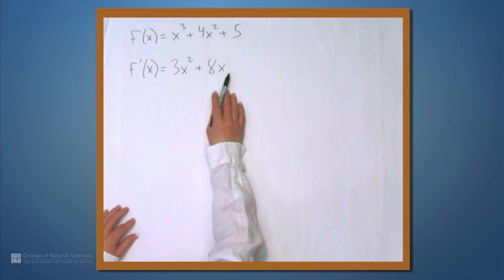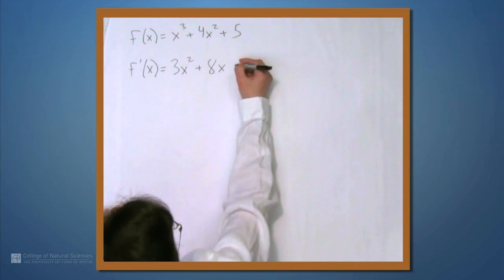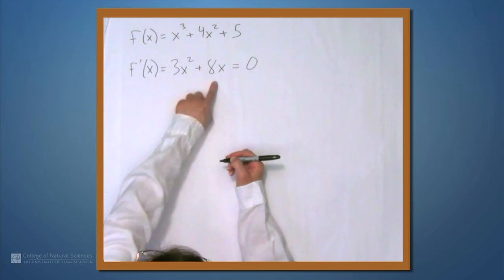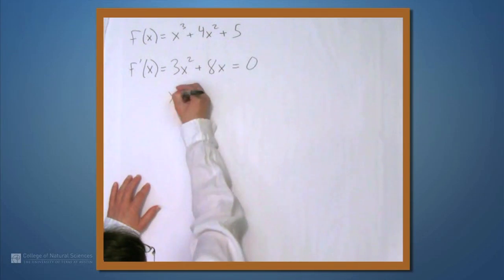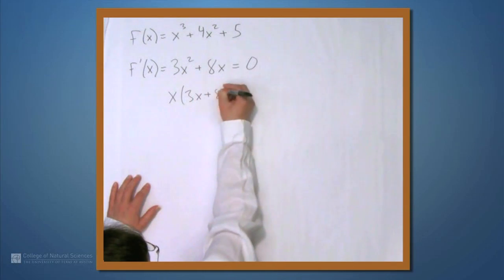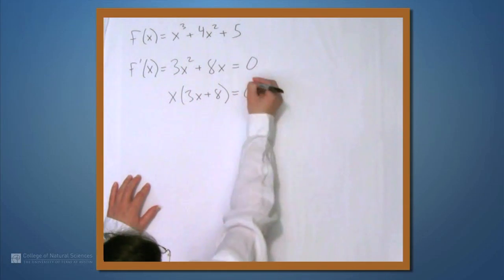So, what we want to do is set this equal to 0 and solve for x. If we set this equal to 0, well, we can factor an x out of both of these. So, we get x times 3x plus 8 equals 0.